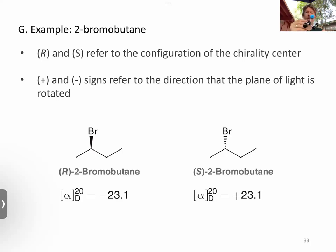So you put the lowest priority one in the back. My bromo with my highest atomic number will be my number one substituent. Then I've got two carbons. This will be my number two. Number three. As I go from one to two to three, I'm going clockwise. This is going to be our R-2-bromobutane.